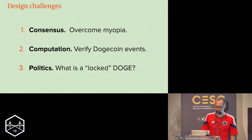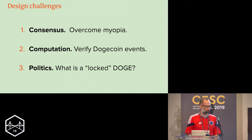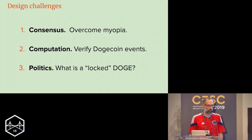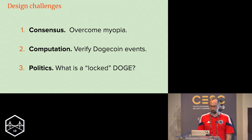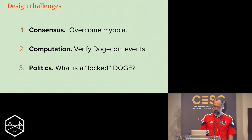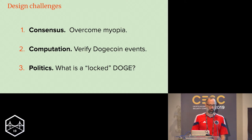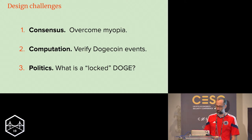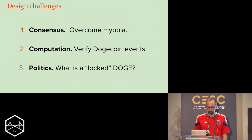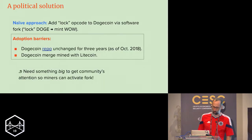And then finally what I called 'politics' — what does it mean to lock a Doge in Dogecoin? As we said, there are no smart contracts. Presumably you need some mechanism for locking a Doge, which probably means we need to change the software. That is a political solution in which we engage the miners.